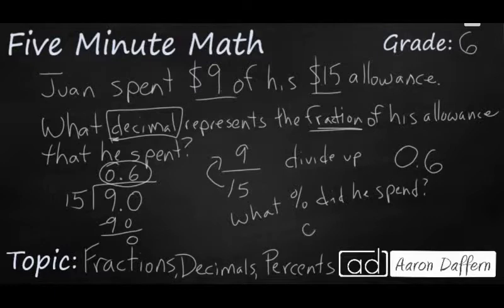You take your decimal. I'll write it again, 0.6. Move the decimal place once, twice to the right. You can drop the 0 right here, put a 0 in the empty spot. And so he spent 60% of his allowance. Let's look at another example.